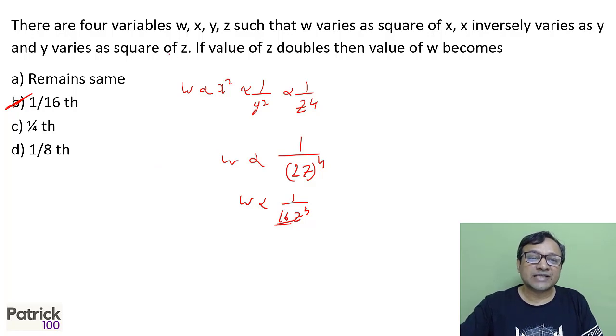You can do it this way also. If z doubles, y will become 4 times because square of y. x is inversely proportional to y, so x will become 1/4th time. And w varies as square of x, so w will become 1/16 times. So from that you can make out answer will be 1/16.